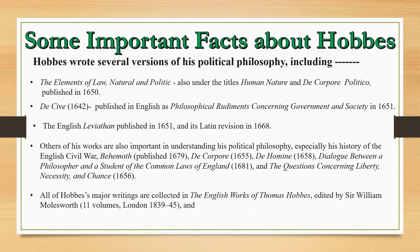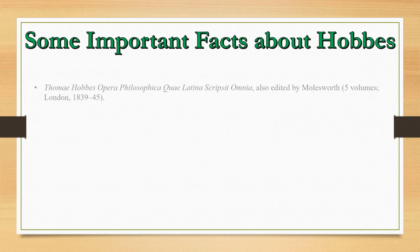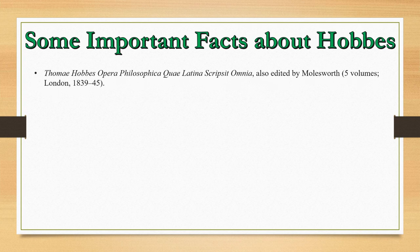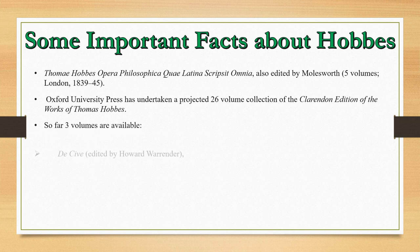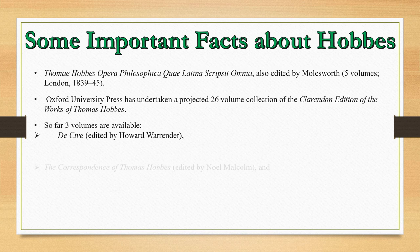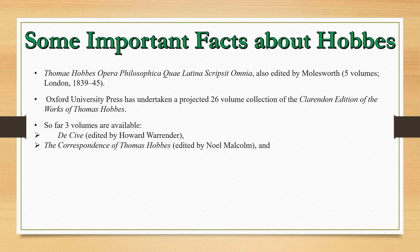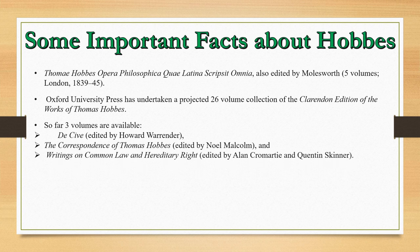All of Hobbes' major writings are collected in The English Works of Thomas Hobbes, edited by Sir William Molesworth. Thomas Hobbes' Opera Philosophica Latina Scripts was also edited by Molesworth. Oxford University Press has undertaken a projected 26-volume Clarendon edition of the works of Thomas Hobbes; so far three volumes are available: De Cive edited by Howard Warrender; the Correspondence of Thomas Hobbes edited by Noel Malcolm; and Writings on Common Law and Hereditary Rite edited by Alan Cromartie and Quentin Skinner.